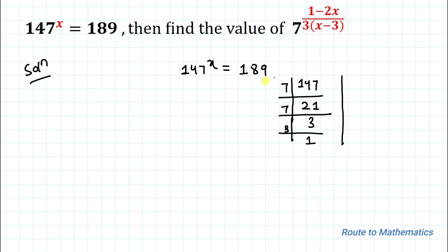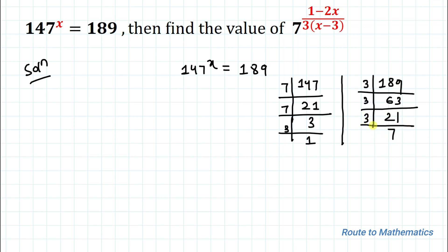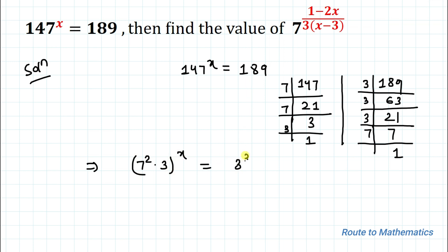Similarly, let's just factorize 189, dividing it with 3 first. So we have 63, again dividing with 3 we have 21, dividing with 3 we have 7, then dividing with 7 we have 1. So from here we can write 147 as 7 squared multiplied with 3, and 189 as 3 to the power 3 multiplied with 7.